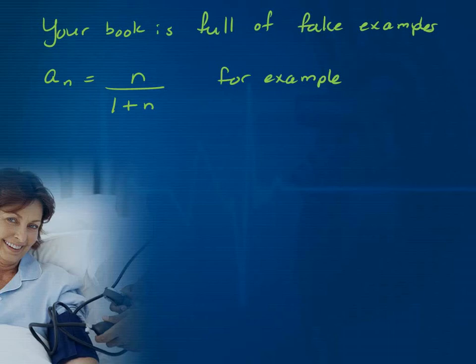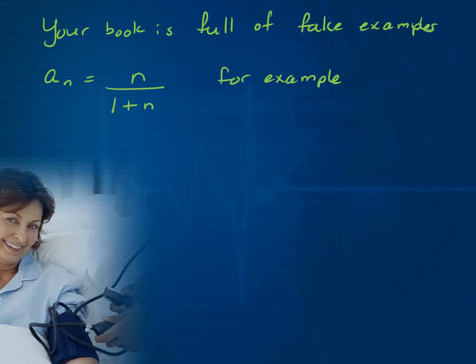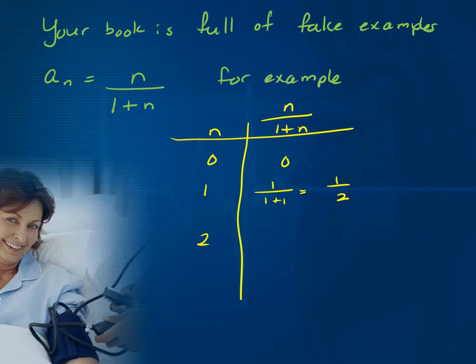That's a real example. Your book is full of fake examples — I have never seen an expression working in medicine. I usually get data and have to figure something out with it. But in the book they have formulas, like n over (1 + n). You would make the sampling of data by plugging in values of n into that formula, make a table, and plot that data — just like I had the real weights, this would be fake data from a formula.